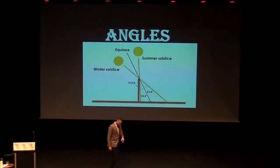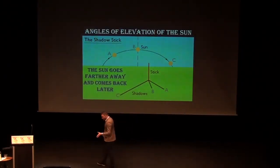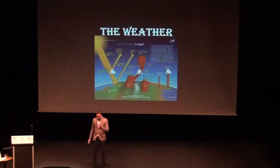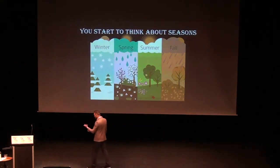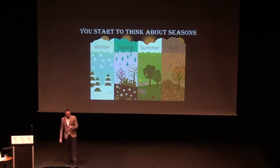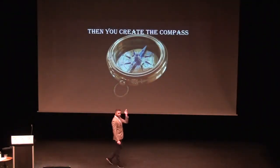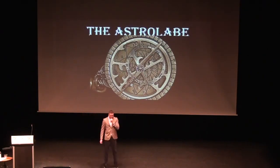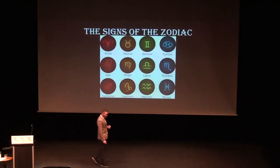With the light of the Sun, you're going to place a stick perpendicular to the ground and measure the shadows. You'll realize that the shadows draw half circles throughout the year. The Sun travels farther away and comes back — the weather changes as it moves, the oceans change as the moon moves. Then you start thinking about seasons, you realize you need something to navigate, so you create a compass. Then you realize every other light in the sky is connected, so you create the astrolabe to measure angles.